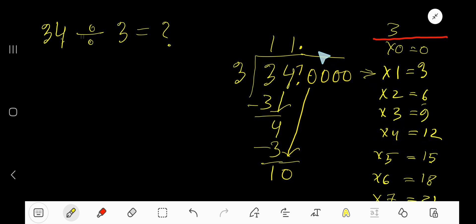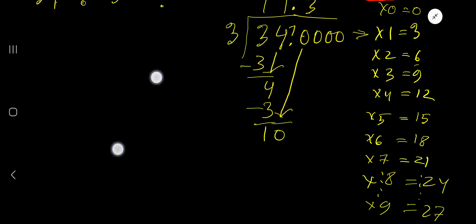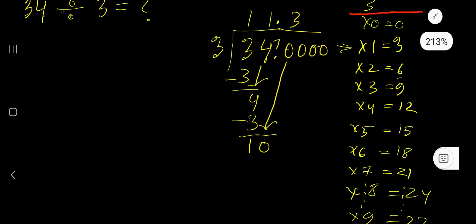3 times 3 gives you 9. Subtract, you get 1. Bring down the next 0, so you have 10. 3 goes into 10 how many times? 3 times. 3 times 3 is 9. Subtract, you get 1.